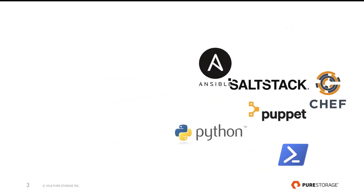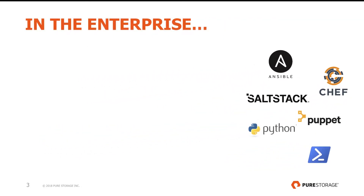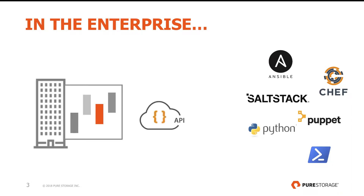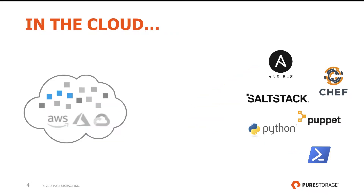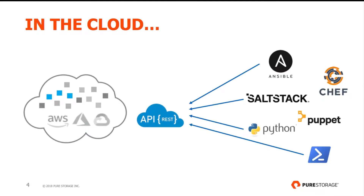If you manage an on-premises environment, typically found in large enterprises, your automation scripts will leverage specific automation APIs, purpose-built for your on-premises infrastructure and tools. However, if you work for a cloud company and want to perform a similar set of tasks in cloud environments, you will most likely have to leverage a different set of APIs and write different scripts.